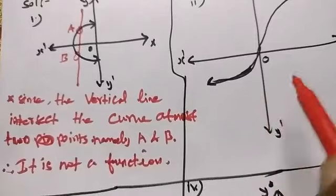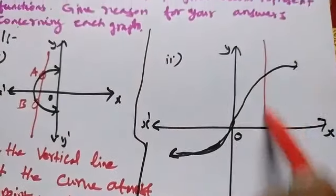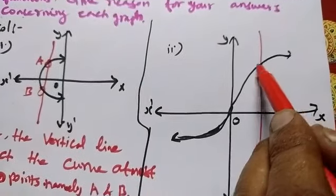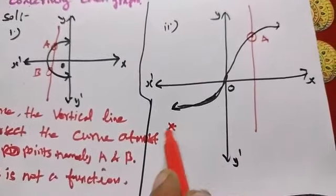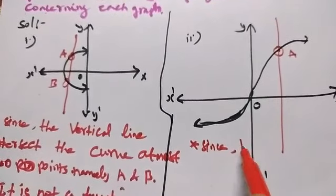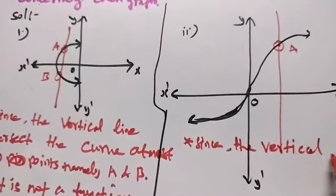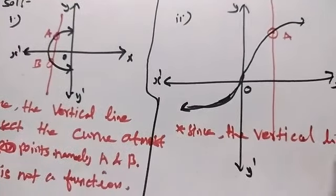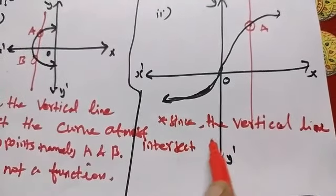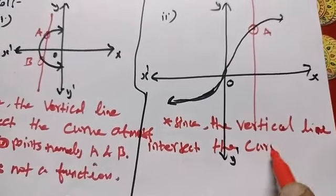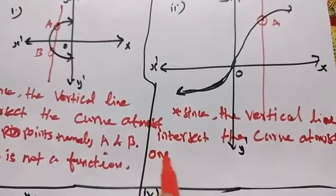Next is the second curve. The vertical line drops, so the given curve has one point intercept. Since the vertical line intersects the curve at most one point,